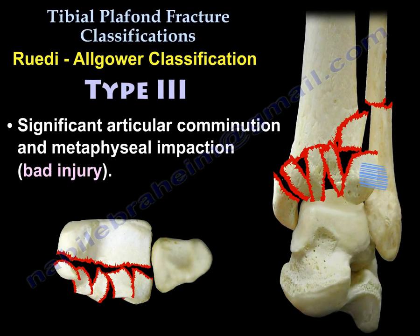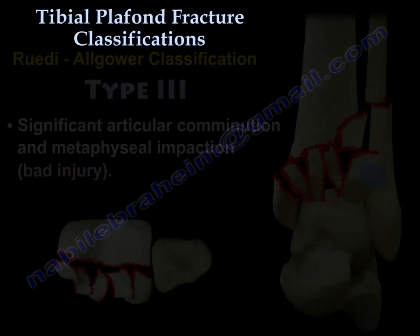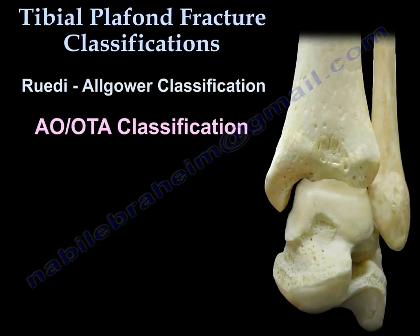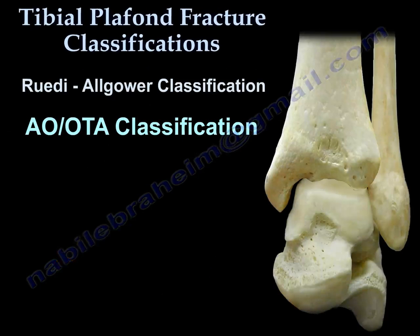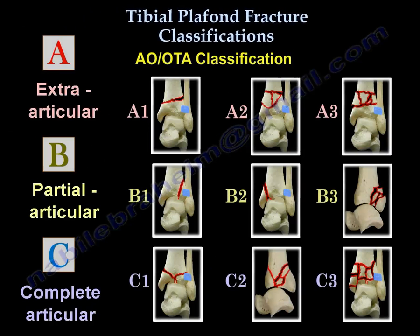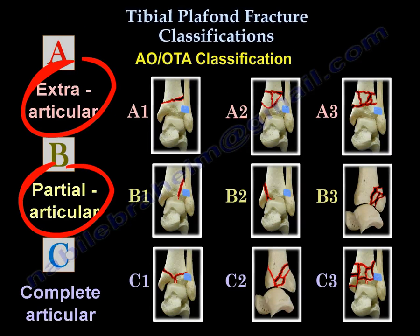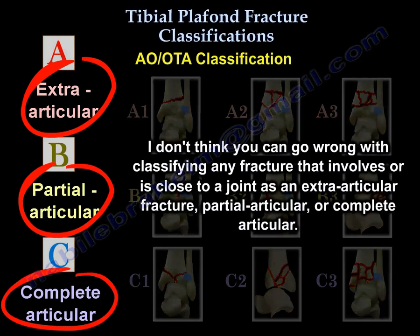Type 3 is a bad injury. The AO-OTA classification also has three types: extraarticular fracture, partial articular, or complete articular. You can't go wrong classifying any fracture involving a joint as extraarticular, partial articular, or complete articular.